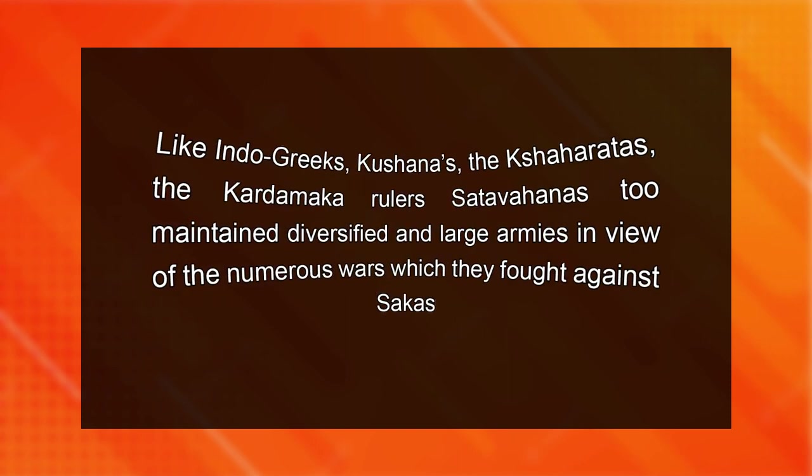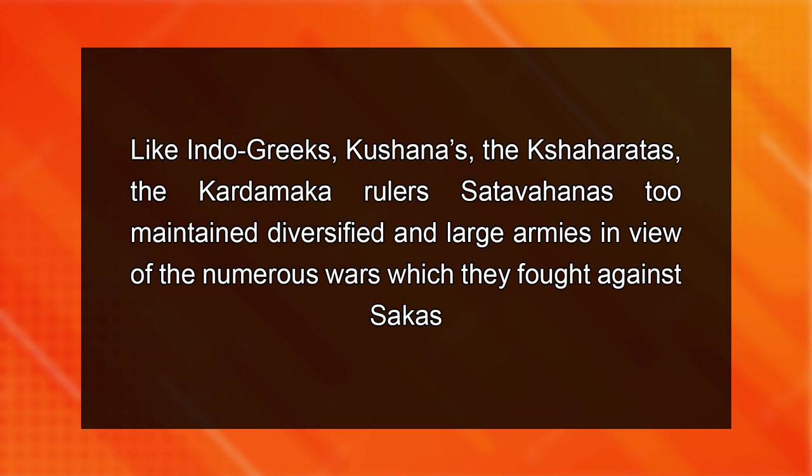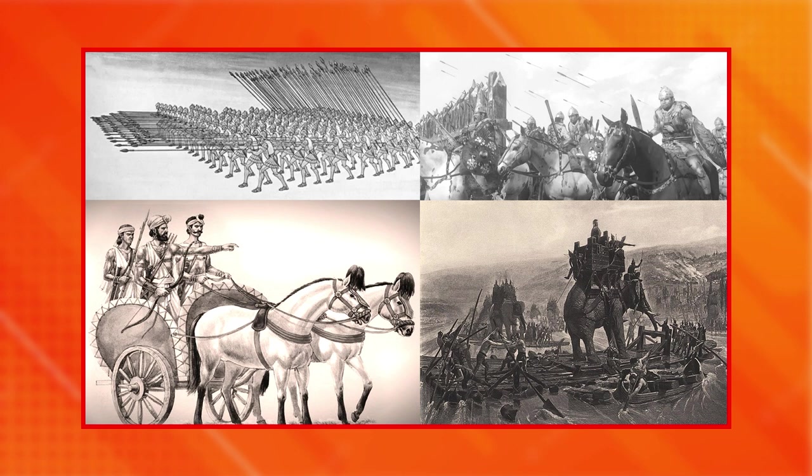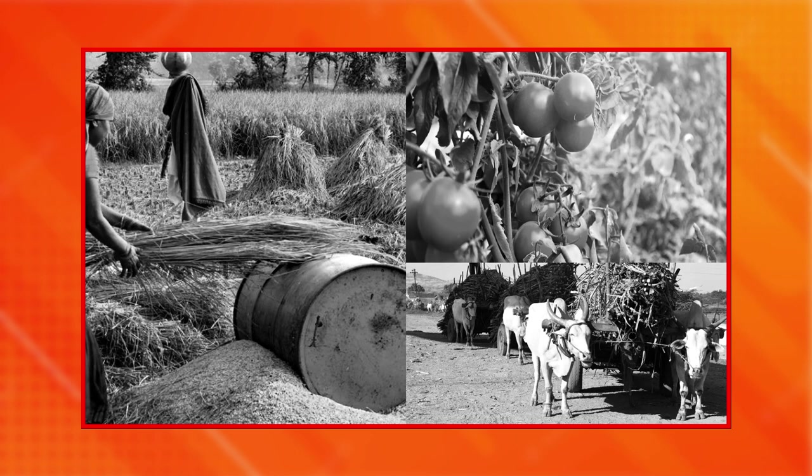Let's shift to the administration of the Satavahanas. Like the Indo-Greeks, Kushanas, Kshatrapas and Kardamaka rulers, Satavahanas too maintained diversified and large armies in view of the numerous wars they fought against the Shakas. The Satavahanas ruled in different pockets and were always engaged in colonizing other areas. Their territorial expansion was based on the strength of their army. Apart from cavalry, the Satavahanas possessed infantry, chariots and elephant forces. The army commander was known as the Mahasenapati, often associated with discharging civil functions as well. Revenue from agricultural production was the main source used for maintenance of civil and military forces. Revenue was also collected from artisans associated with different crafts, Karukara, including a tax on salt production, Lolakhandakam.